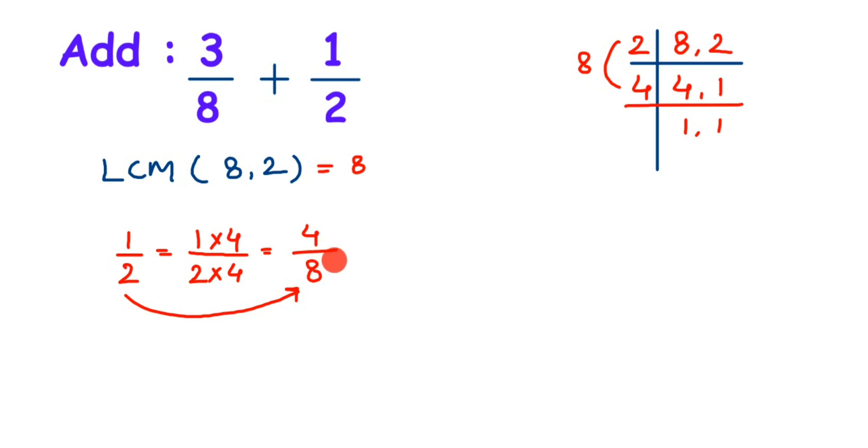Now let's add them. So the first number is 3 by 8. You can see that 8 is already present, so you don't have to change. In case it's not the LCM number, then you have to change the same way how we have done for 1 by 2. Now instead of 1 by 2, I'm going to take 4 by 8.